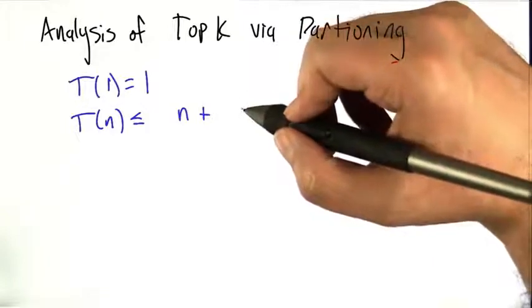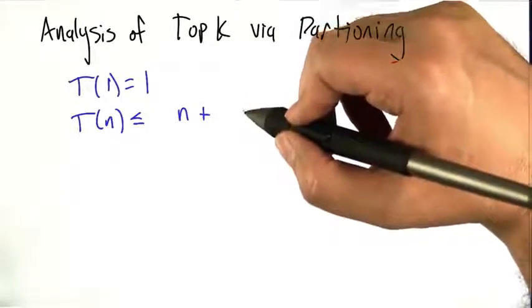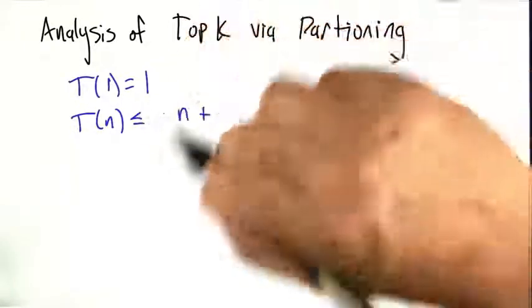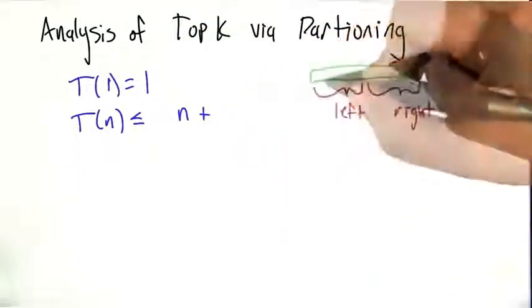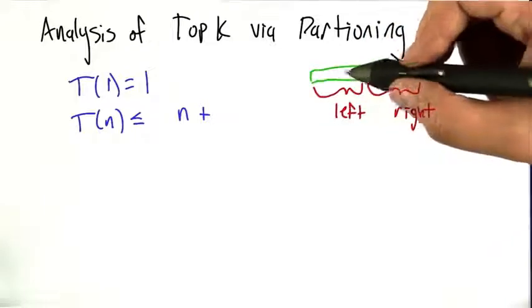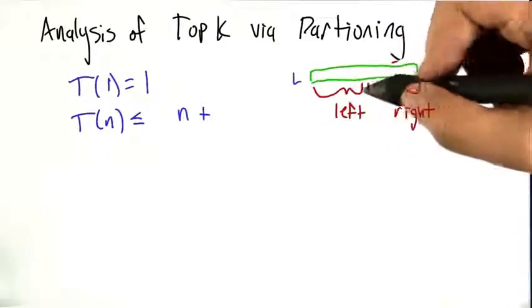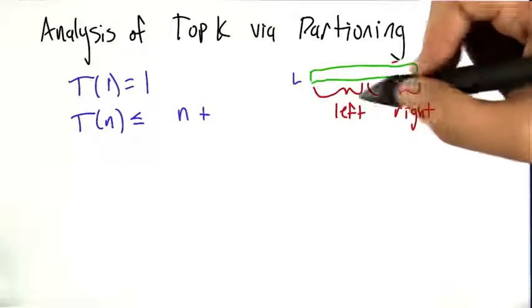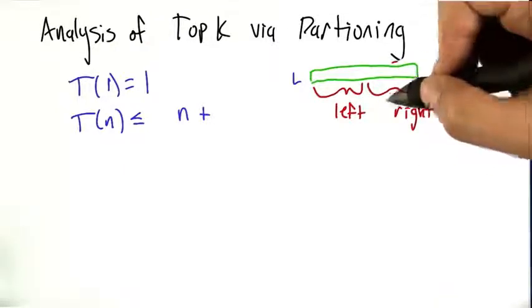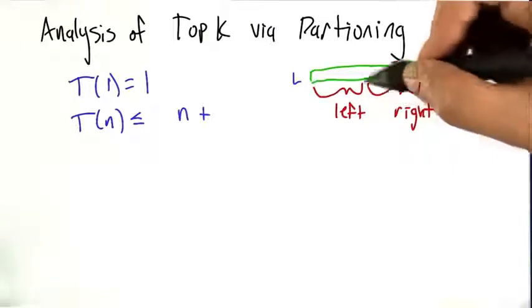Assuming it hasn't gotten really lucky, and since this is a less than or equal to, let's assume it didn't get lucky. It's going to recurse on either the left or the right. Now the partitioning algorithm is going to split this list into a left and a right. In the different cases, it's going to recurse on either the left or the right. But we don't know which one it's going to recurse on, and we don't know which one is bigger.